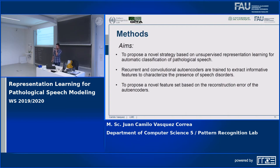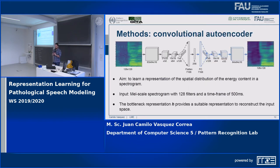We propose a novel strategy based on unsupervised representation learning for automatic classification of pathological speech. We trained recurrent and convolutional autoencoders to extract informative features to characterize the presence of speech disorders. We additionally proposed a novel feature set based on the reconstruction error of the autoencoders. The convolutional autoencoder aims to map the spatial distribution of energy present in a spectrogram. The input is a mel-scale spectrogram divided into 128 filters with a time frame of 500 milliseconds, and we consider the bottleneck representation to reconstruct the input spectrogram.